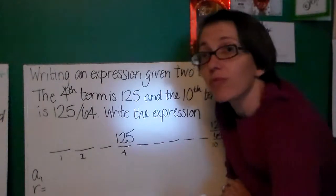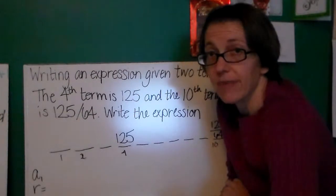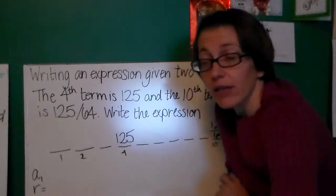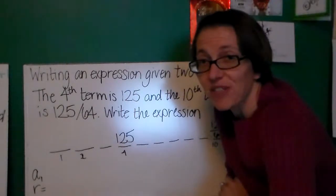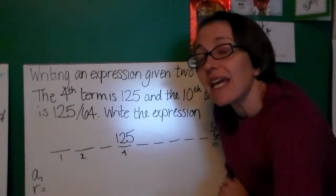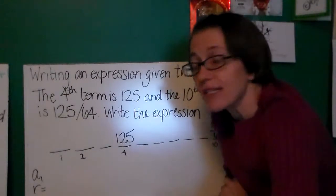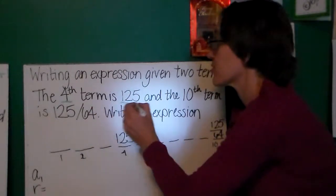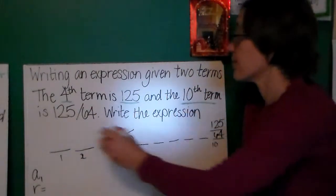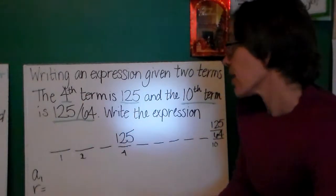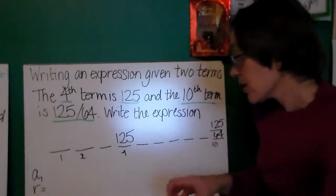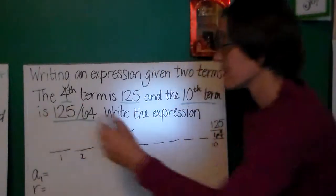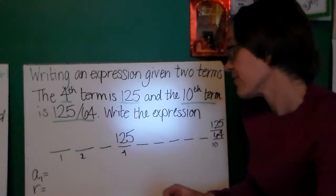You also need to be able to write an expression when you are given just any two terms in the expression. We looked at how you could do this given an arithmetic sequence and two terms of that. We're going to use a similar process for the geometric sequence. Here, I'm told that the fourth term is 125 and the tenth term is 125 over 64. Write the expression. Well, I still need to figure out what's a_1. I need to figure out what's r.